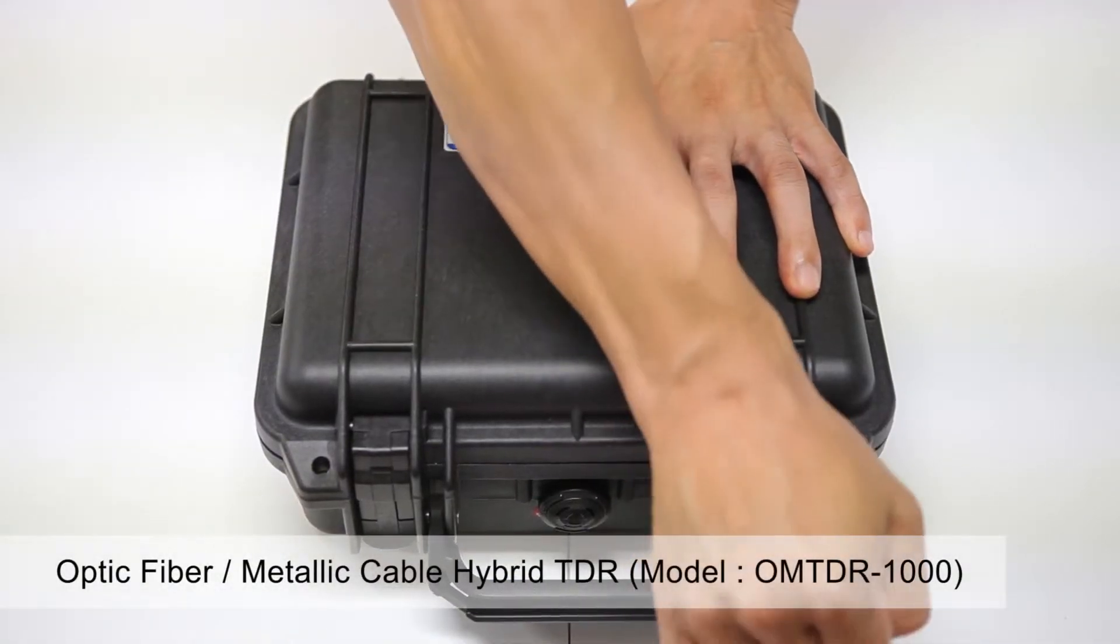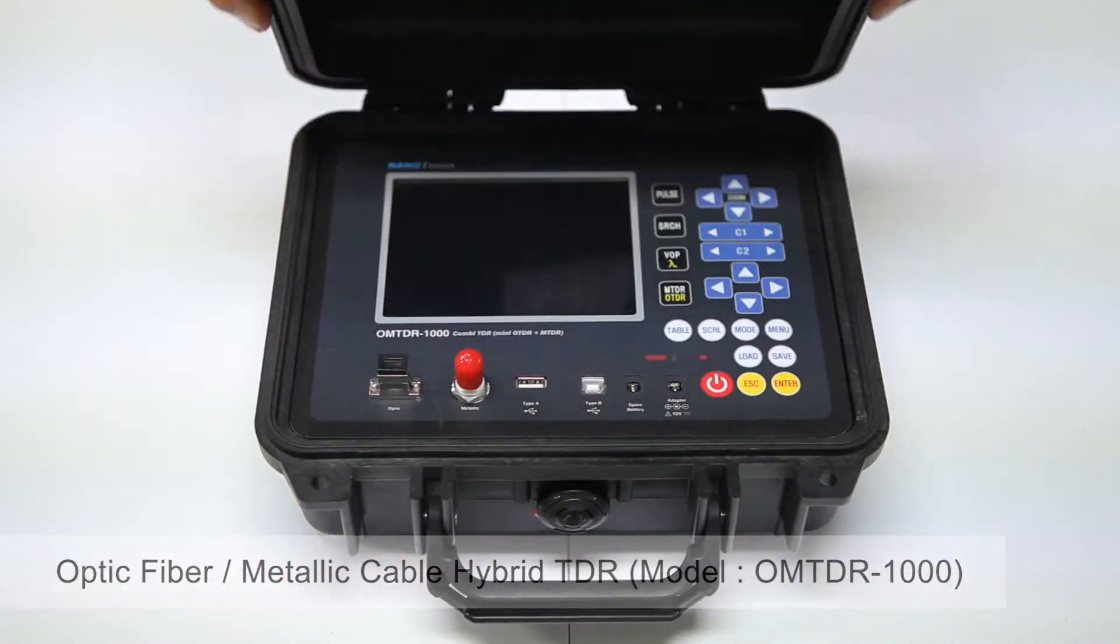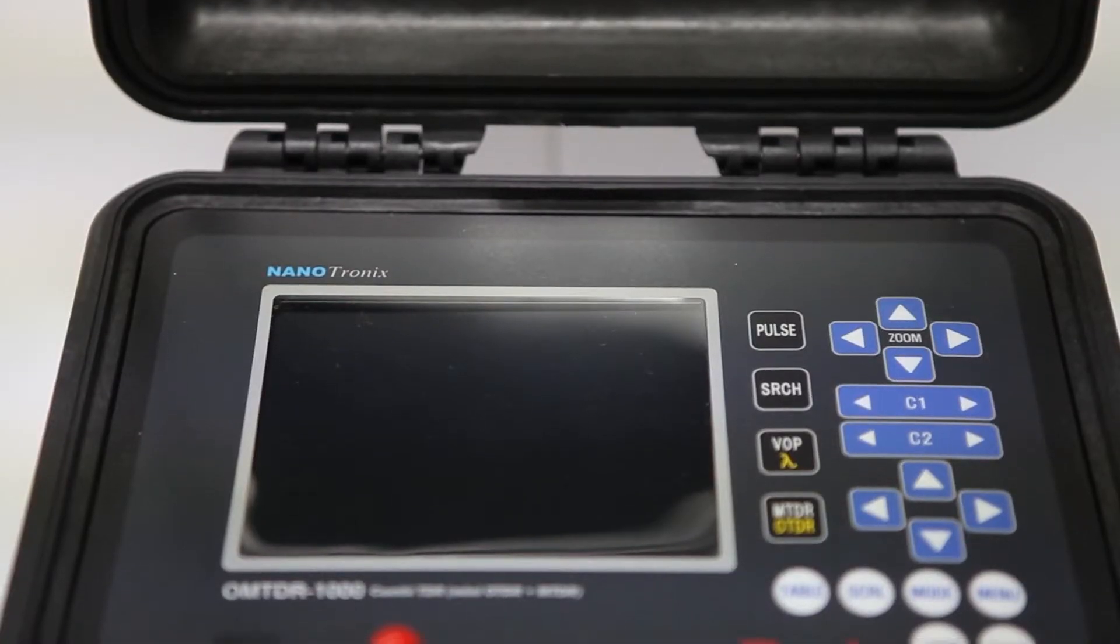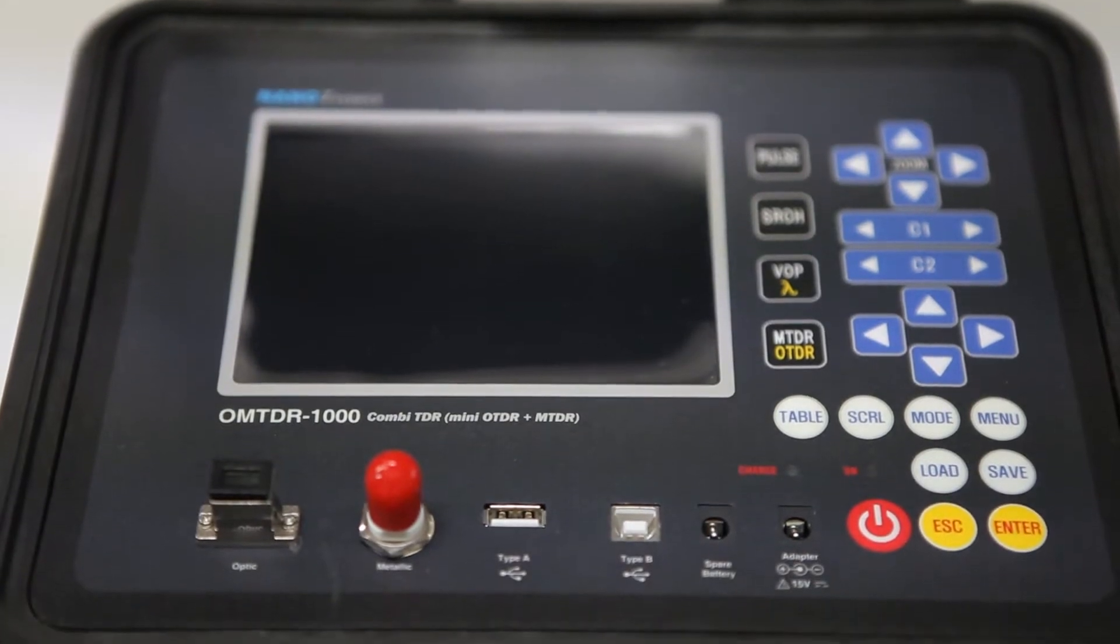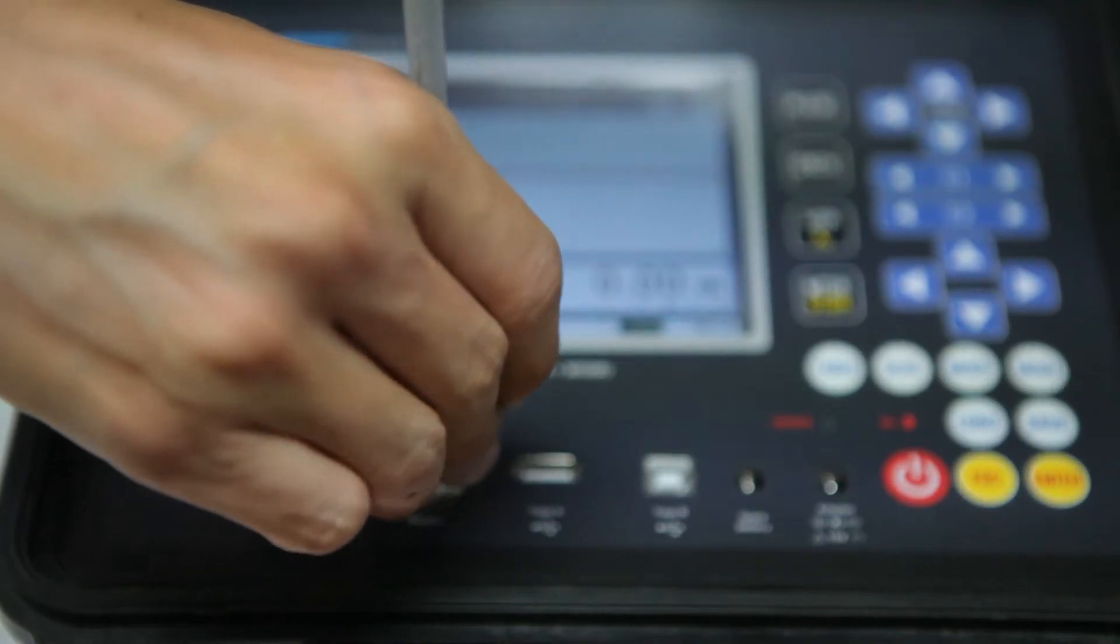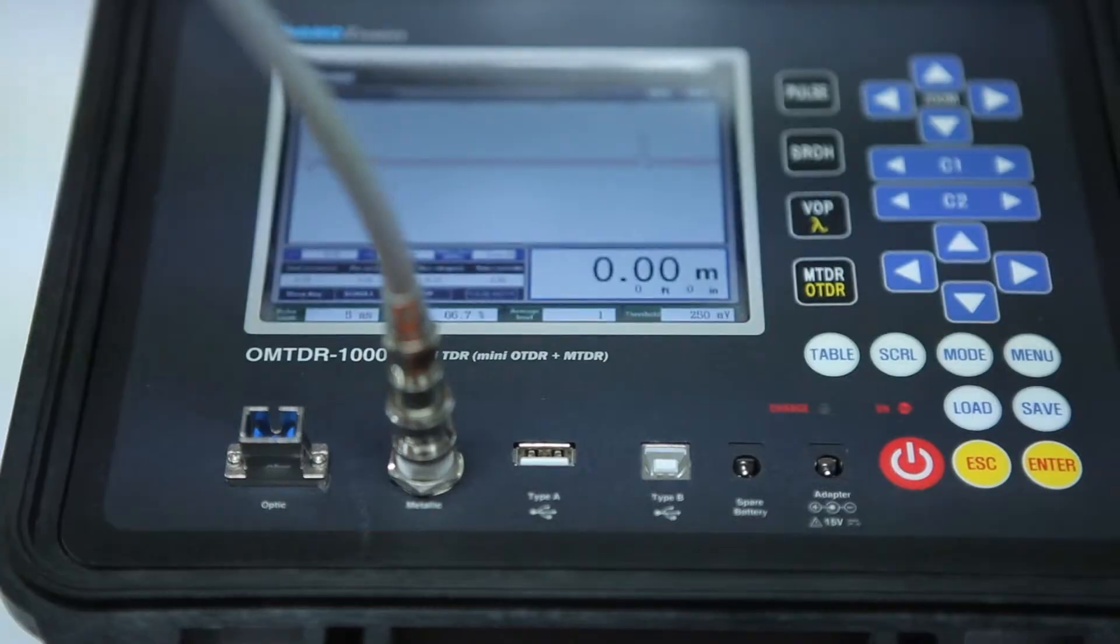The Hybrid TDR is an optic fiber and metallic cable hybrid measuring device that combines the Mini OTDR function, which measures optical fibers, with the MTDR function, which measures metallic cables.